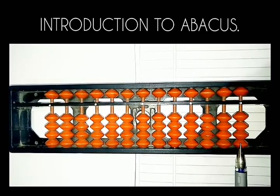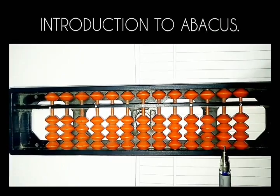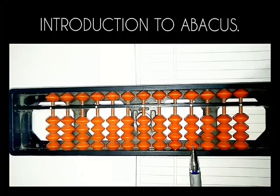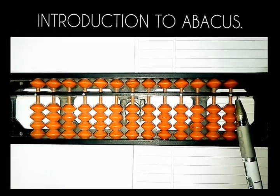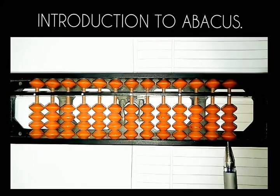This is tens rod. This is hundreds rod. This is hundreds rod, and this is thousands rod. The white dot on the Abacus scale represents units place or ones place.